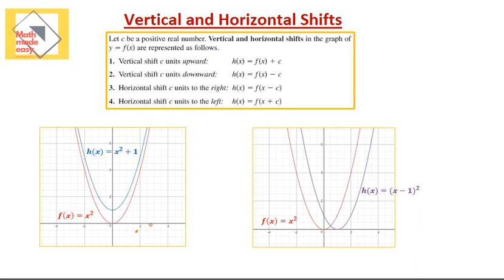We have here two graphs. In the first one, we have the parent function f of x equals x squared, which is a quadratic. After transforming it to h of x, we changed f of x into h of x by adding 1. What happened to the function when we added 1? It moved 1 unit up — each point moved 1 unit upwards. This is what we call a vertical shift. So instead of the vertex being at (0, 0), it moved up to the point (0, 1).